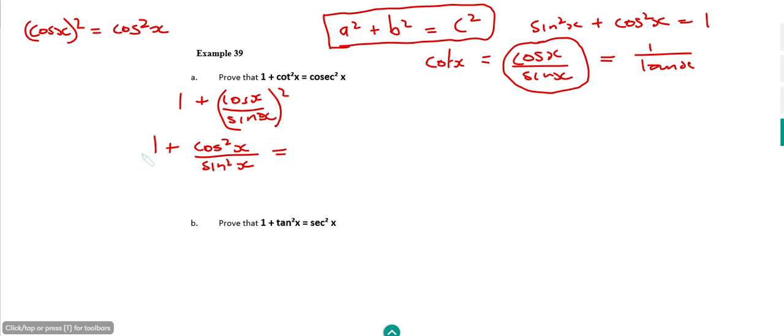And then if we try and work out, we've got to add these two together. The 1 could be written as 1 over 1 as a fraction. And then we need a common denominator, which would be sin squared. So I'd have to multiply top and bottom of the 1 over 1 by sin squared. So I'd get sin²x over sin²x for the 1, and then that would be plus the cos²x over sin²x that we've already got.